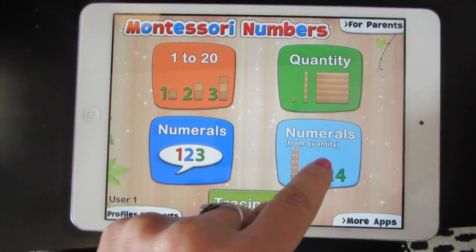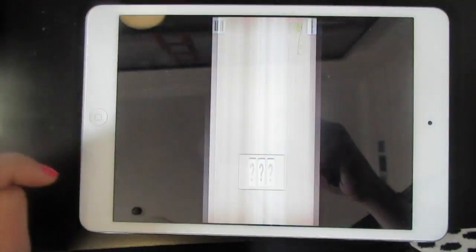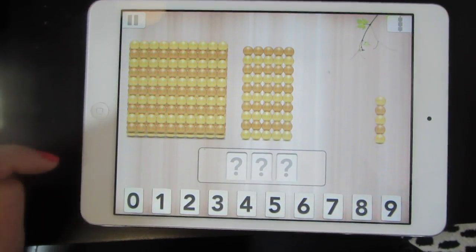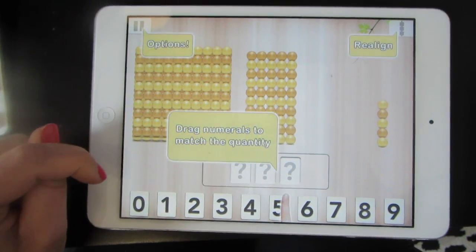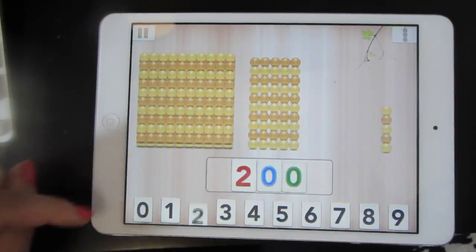You can also try numerals from quantity. Count the number you see. There are two hundreds, so I'll put a two in the hundreds place.